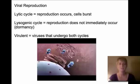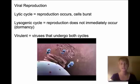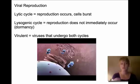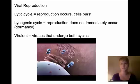During viral reproduction, in the lytic cycle the virus goes into a cell, uses that cell's machinery to reproduce itself, and then causes the cell to burst — it kills the cell — and the reproduced virus moves on. There's also a lysogenic cycle, where the virus infects the cell and takes over the cell's machinery to reproduce, but it doesn't kill the cell right away.